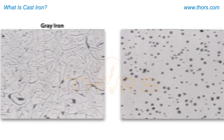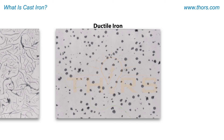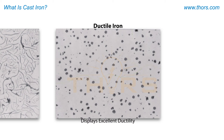By contrast, ductile iron, another type of cast iron, displays graphite in spherical or nodular form. This matrix is continuous, and although it lacks the vibration damping characteristics of grey iron, this alloy displays excellent ductility.